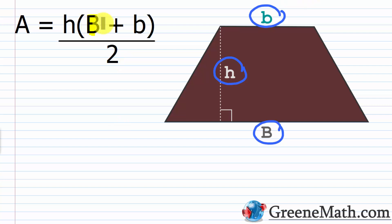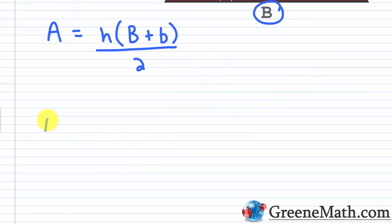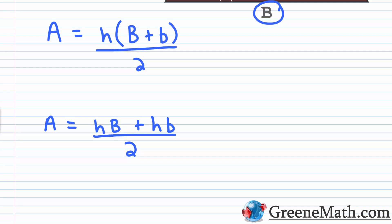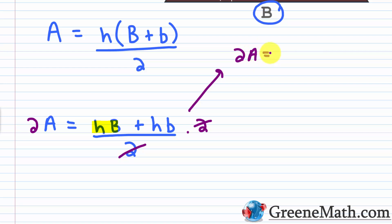To solve for uppercase B, I want to isolate the variable term containing it. I'll use the distributive property to remove parentheses: A equals H times uppercase B plus H times lowercase b, all over 2. Then I clear the denominator by multiplying both sides by 2, giving 2A equals H times uppercase B plus H times lowercase b.